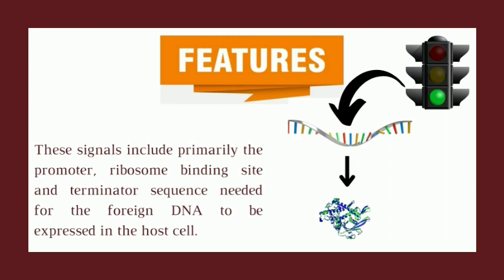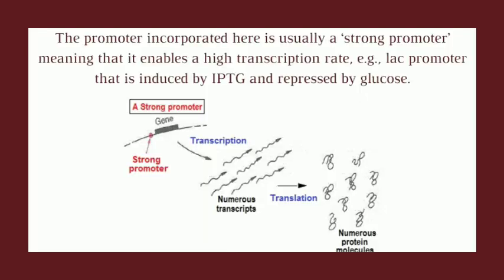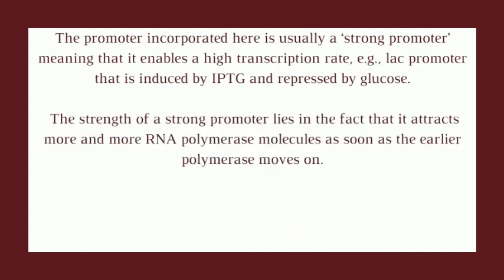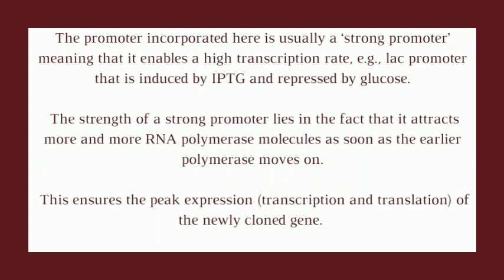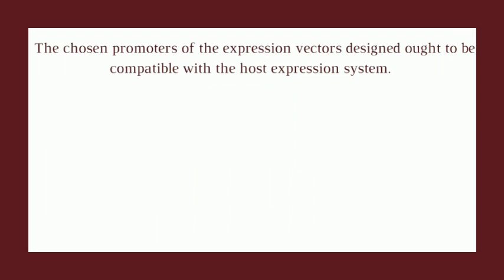The promoter incorporated here is usually a strong promoter, meaning that it enables a high transcription rate. For example, the lac promoter is induced by IPTG and repressed by the catabolite glucose. The strength of a strong promoter lies in the fact that it attracts more and more RNA polymerase molecules as soon as the earlier polymerase molecule moves on. This ensures peak expression of the newly cloned genes, and the chosen promoters of the expression vectors ought to be compatible with the host expression systems.